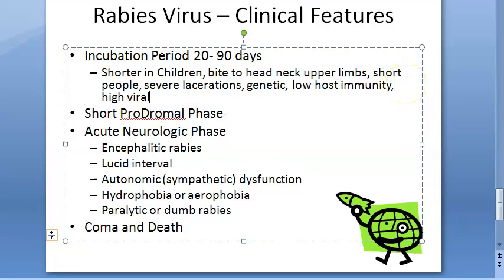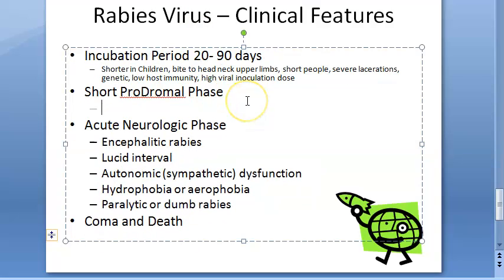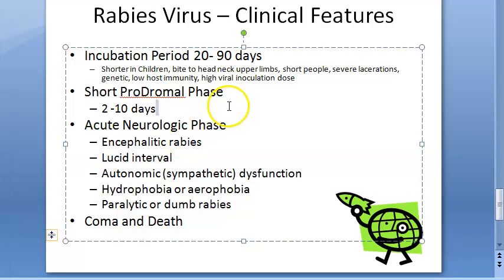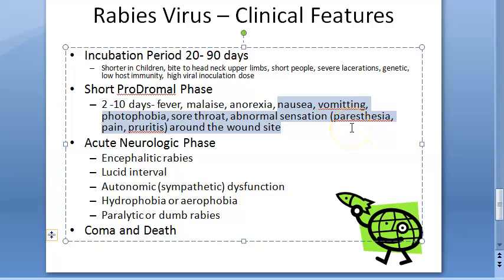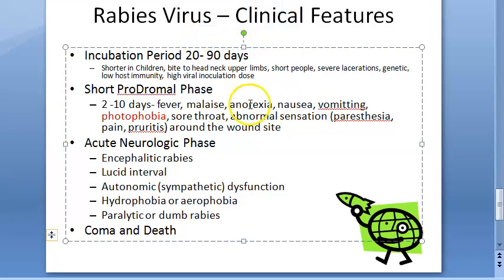High viral inoculation dose also leads to a shorter incubation period. The prodromal phase lasts two to ten days and is characterized by non-specific symptoms: fever, malaise, anorexia, nausea, vomiting, photophobia, sore throat, and abnormal sensations like paresthesia, pain, and pruritus around the wound site. Photophobia is an important clue here.